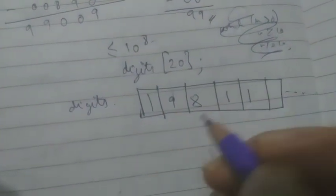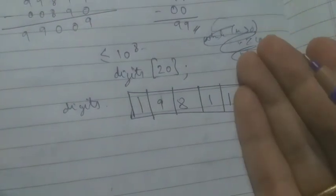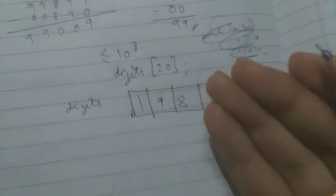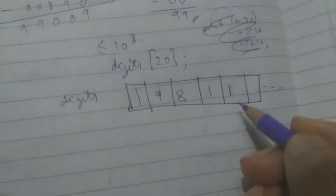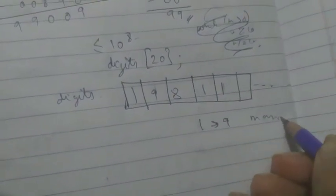So once you are done with this, you have to find the first non-9 number. The first non-9 number which is 1, right, the non-9 number is 1. So you have to replace 1 with 9 for the maximum, for the maximum thing.